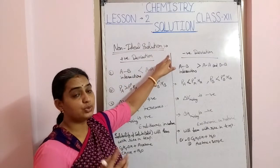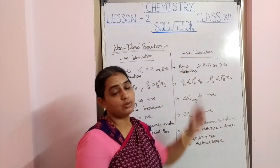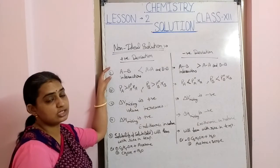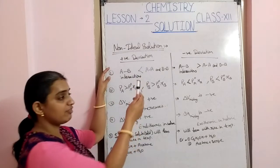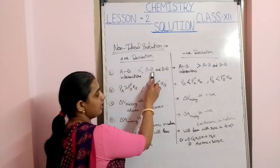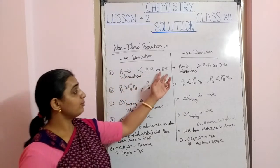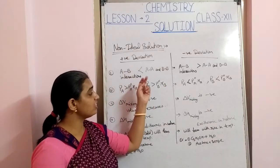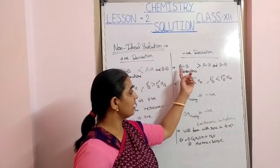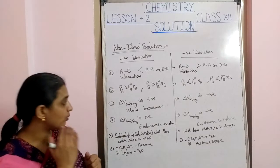Non-ideal solutions are divided into two parts: positive deviation from Raoult's Law and negative deviation from Raoult's Law. For positive deviation, the first condition is that A-B interaction is less than A-A and B-B interactions. For negative deviation, A-B interaction is greater than A-A and B-B interactions. When interaction is less, the molecules are farther apart; when interaction is more, they are closer.